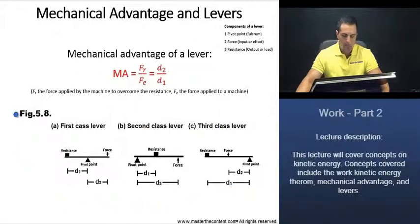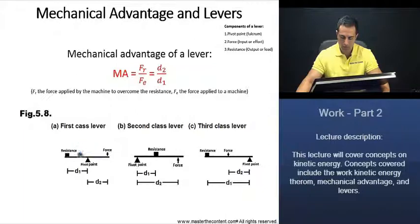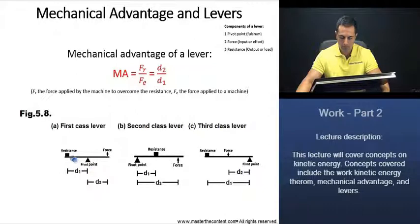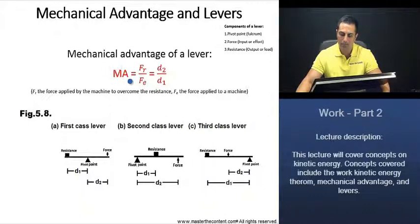Now, figure 5.8. A first class lever is distinguished by having the pivot point between the resistance and the force. In regards to mechanical advantage, a first class lever can be greater than or less than 1, depending on the distances of the resistance and force from the pivot point. For example, if the resistance is very close to the pivot point and the force is farther away, D2 would be greater than D1, giving a significant mechanical advantage greater than 1.